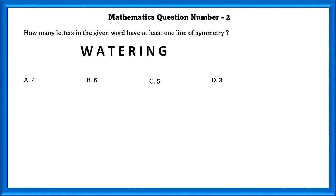Mathematics question number 2. How many letters in the given word have at least one line of symmetry? 5 letters have at least one line of symmetry.